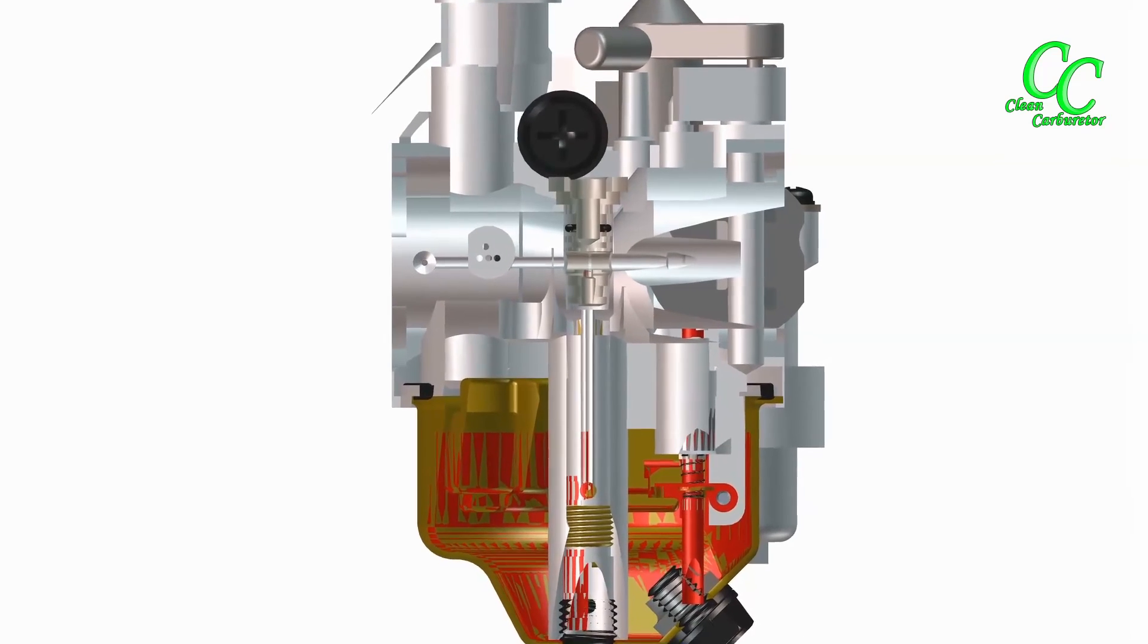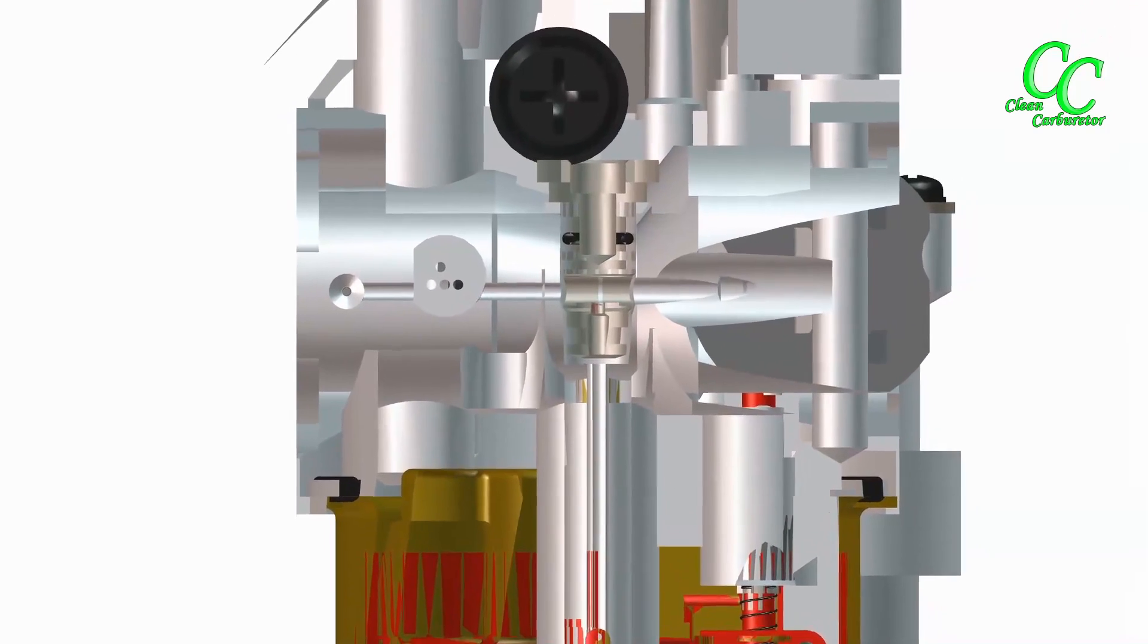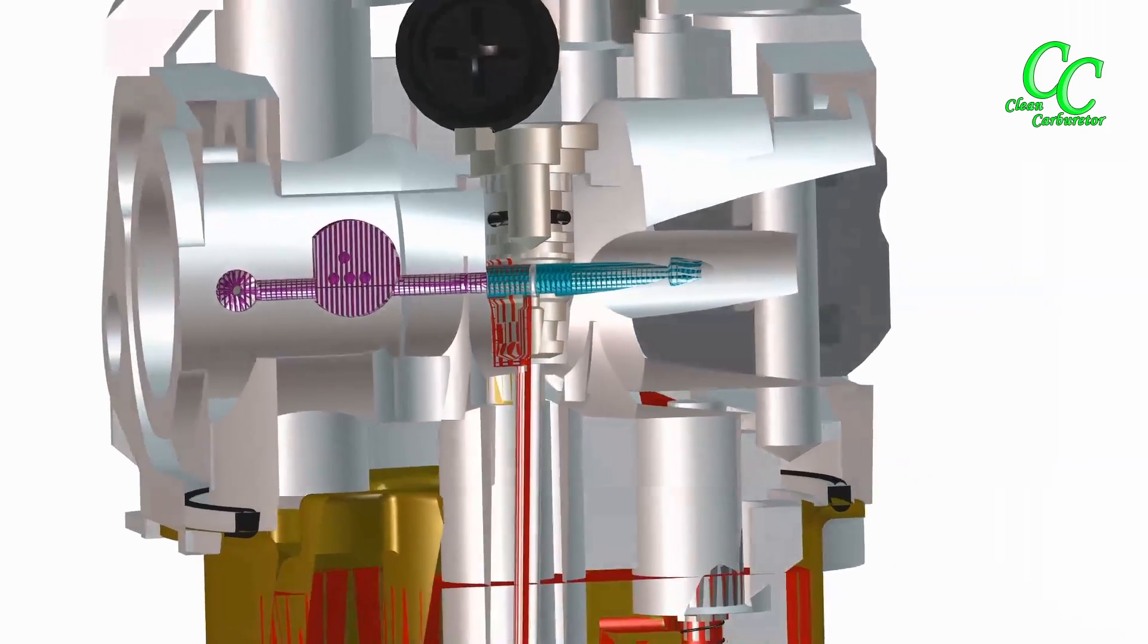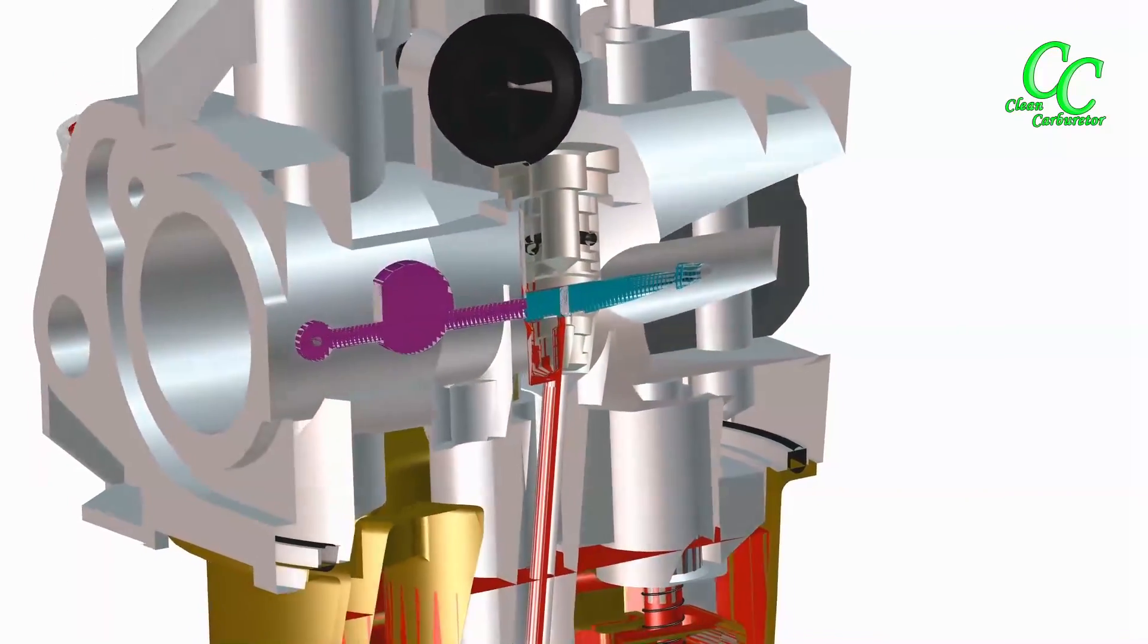Here it mixes with the air drawn through the idle air jet located on the outer face of the carburetor. The mixture of fuel and air travels through the horizontal passage all the way to the front face of the carburetor where the very small idle opening is positioned. Here it enters the intake manifold on its way to the engine cylinder.